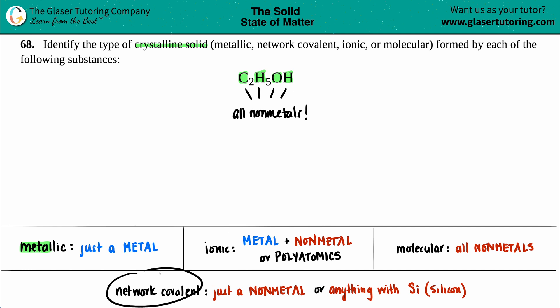A network covalent crystalline solid is the equivalent of the metallic crystalline solid, just in non-metal form. Metallic crystalline solids are just a single metal. Network covalents are just a single non-metal, but here I have three different non-metals: I got carbon, hydrogen, and oxygen. Also, any compound that has silicon as the first element is also going to be a network covalent crystalline solid, but I don't have any silicon here, so that's out the window.